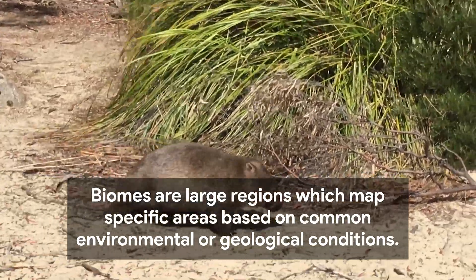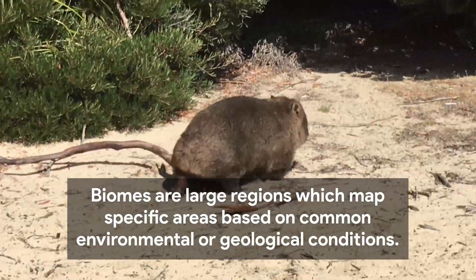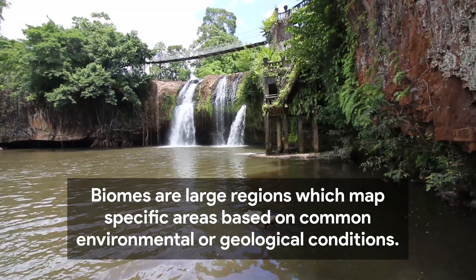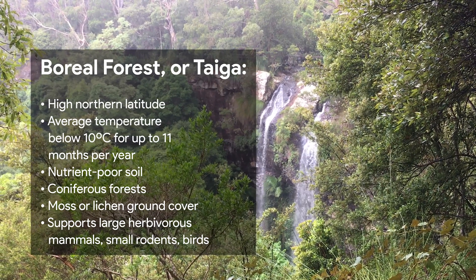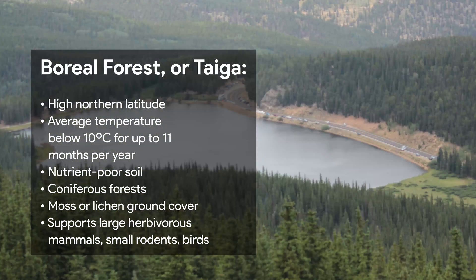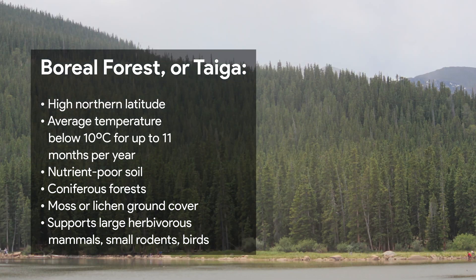Biomes are usually defined by climate and the type of plant life — for example, a tropical rainforest versus a temperate rainforest. Different biomes can support different forms of life. A boreal forest biome, also known as a taiga biome, is found throughout the high northern latitudes. It has a cold climate with an average temperature below 10 degrees centigrade for up to 11 months of the year, nutrient-poor soil with coniferous forests and moss or lichen ground cover. This landscape can support some large herbivorous mammals and small rodents and birds.